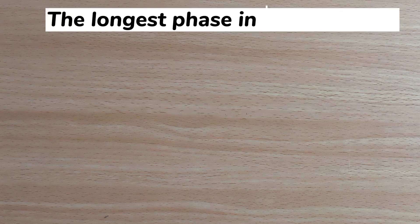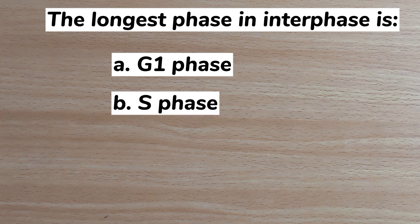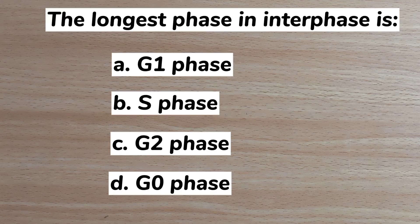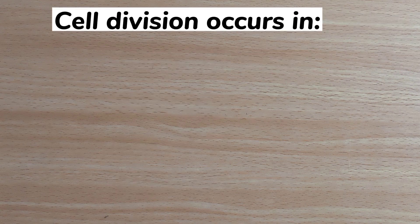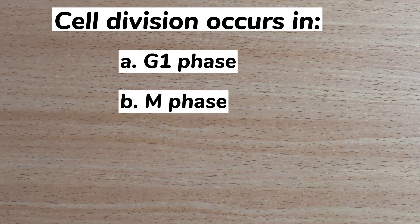Number six: the longest phase in interphase is — A. G1 phase, B. S phase, C. G2 phase, D. G0 phase. Answer: A. G1 phase.